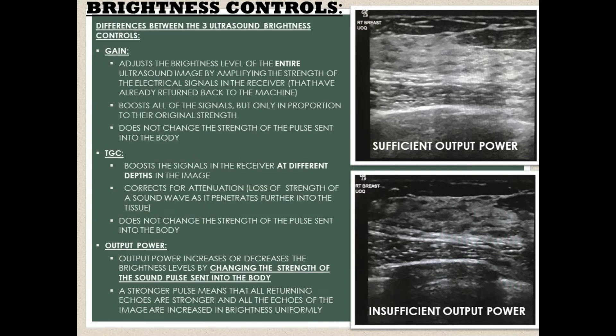Let's compare and contrast the three brightness controls on an ultrasound machine. The first ultrasound brightness control is known as gain, and gain adjusts the brightness level of the entire ultrasound image by amplifying the strength of the electrical signals in the receiver.